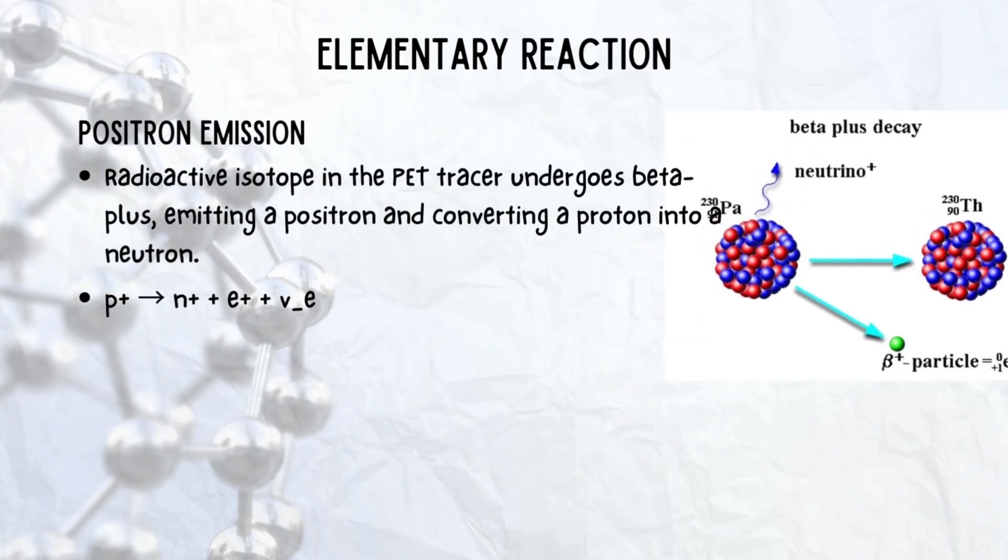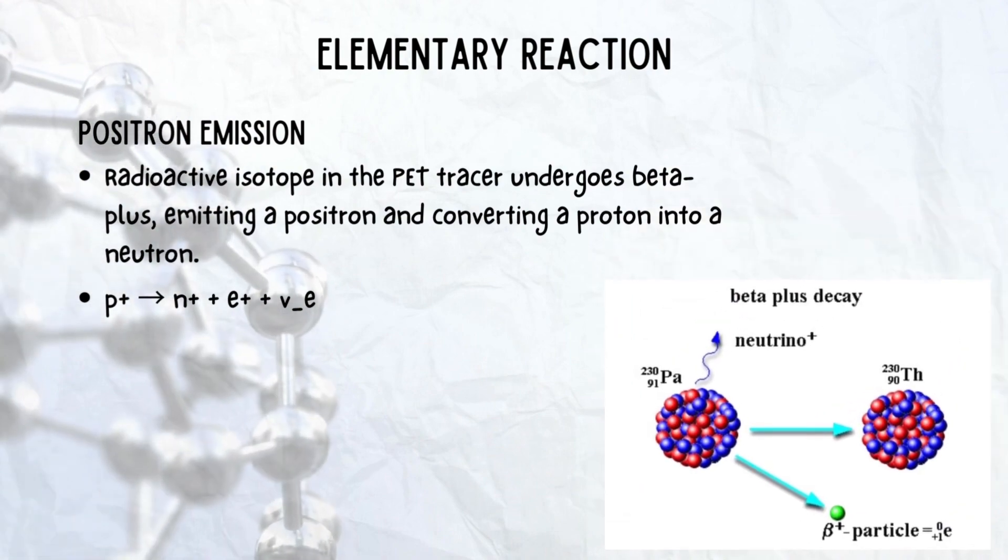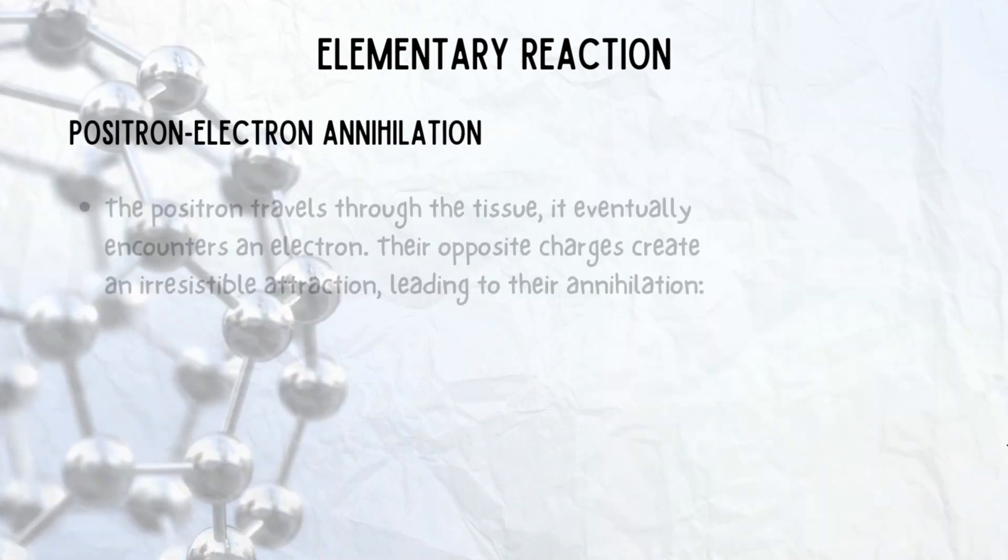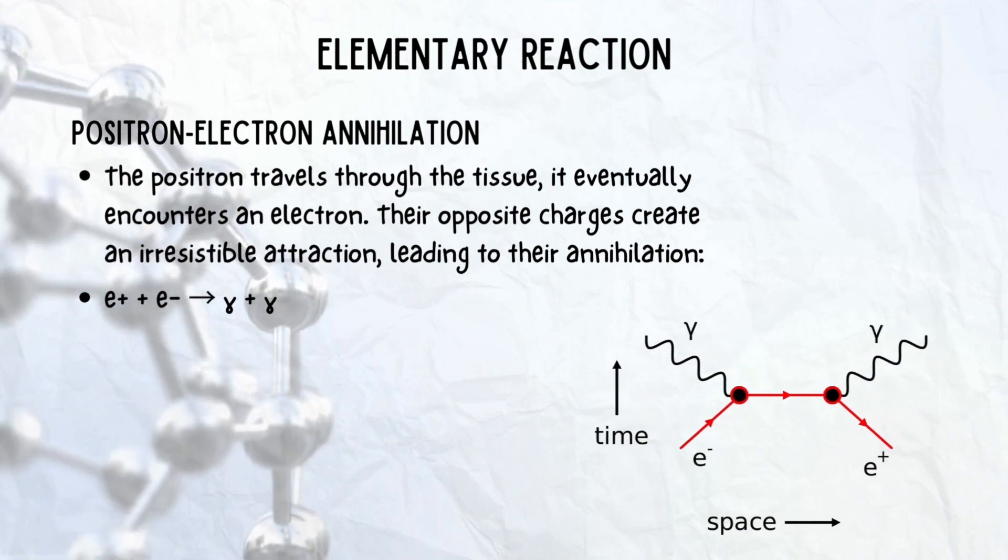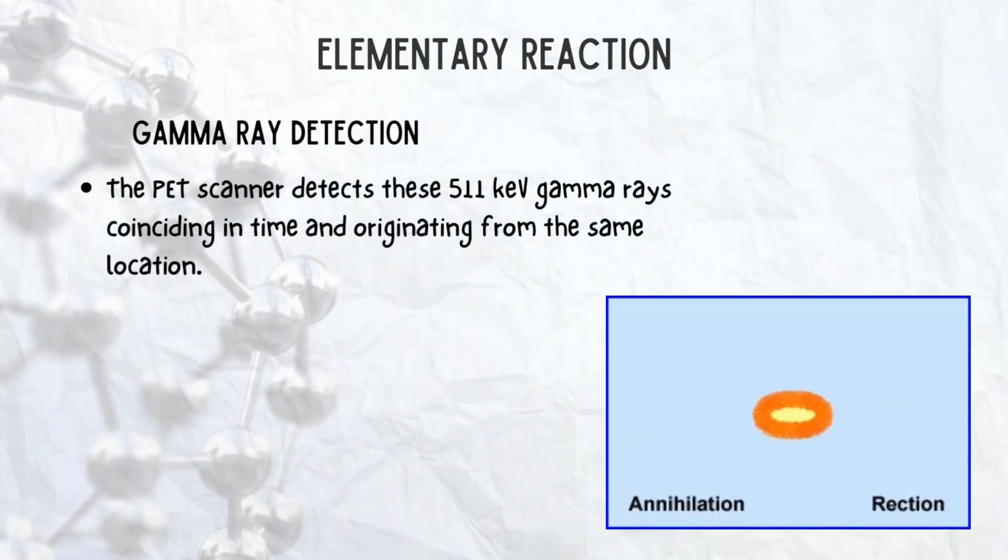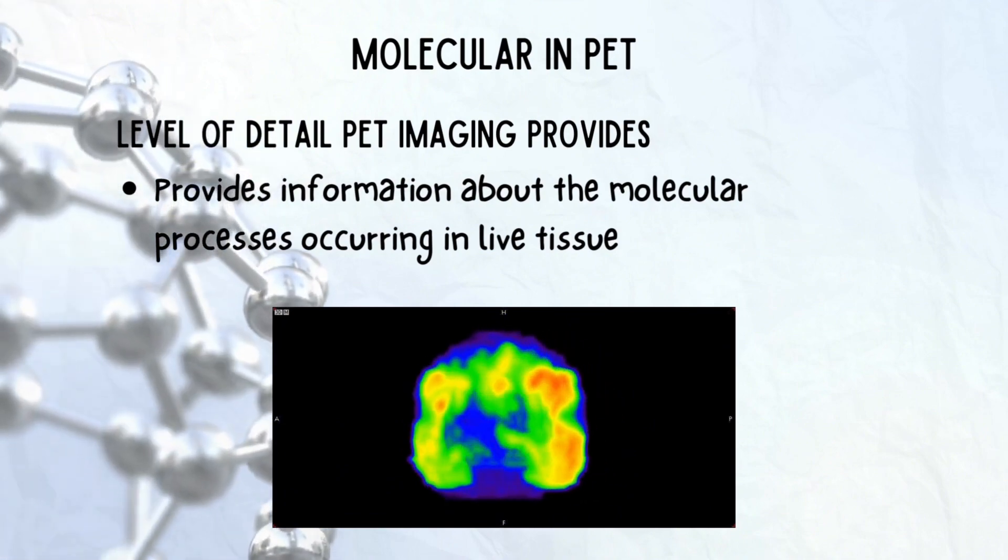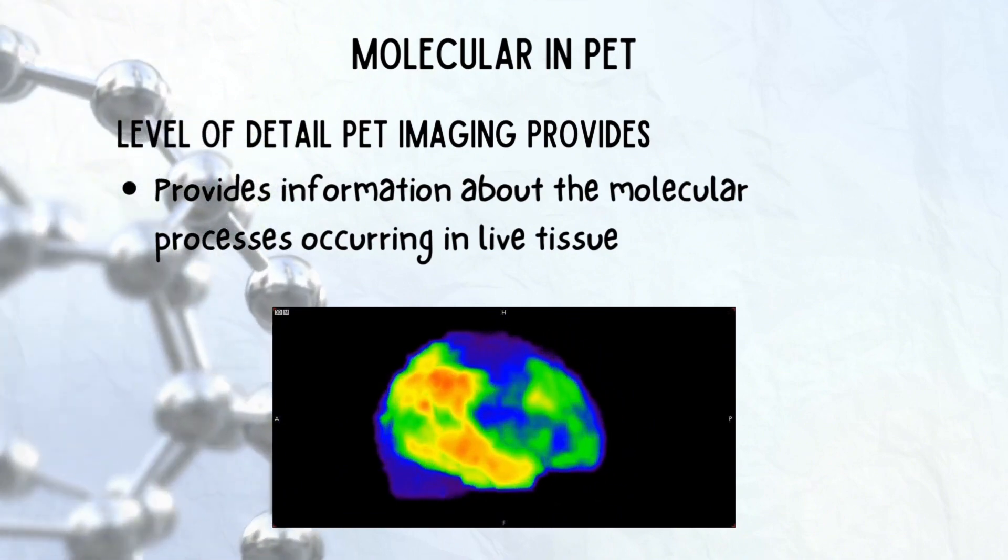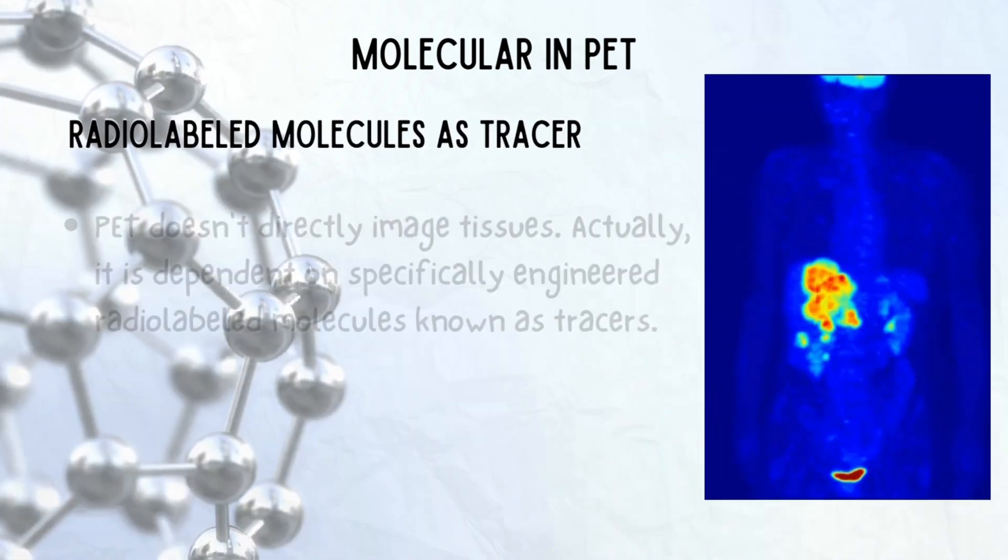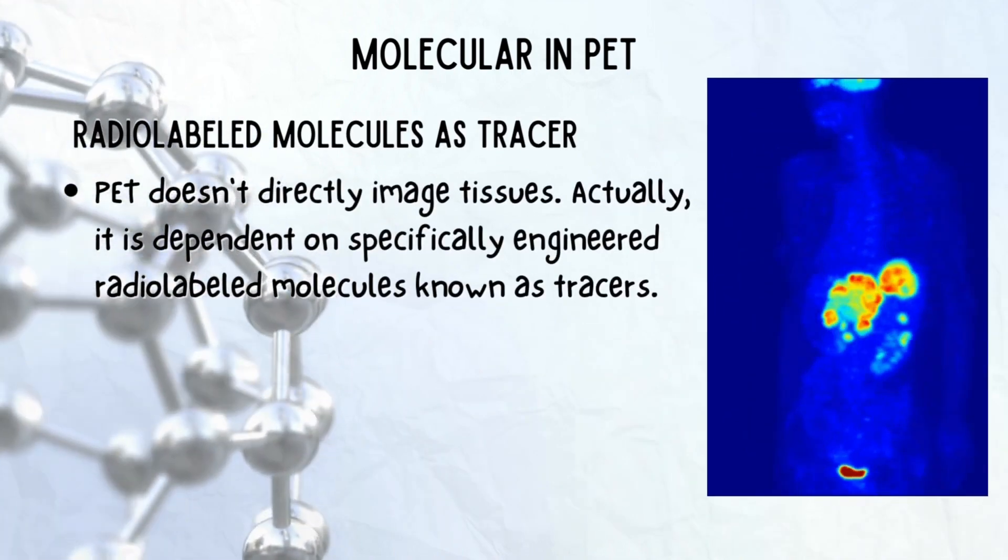This annihilation process involves positron emission, positron-electron annihilation, and gamma ray detection. The molecular in PET refers to main aspects which are the level of imaging provided and radiolabeled molecule tracers.